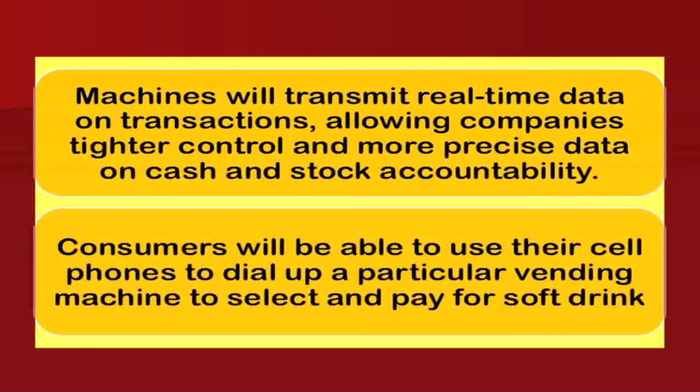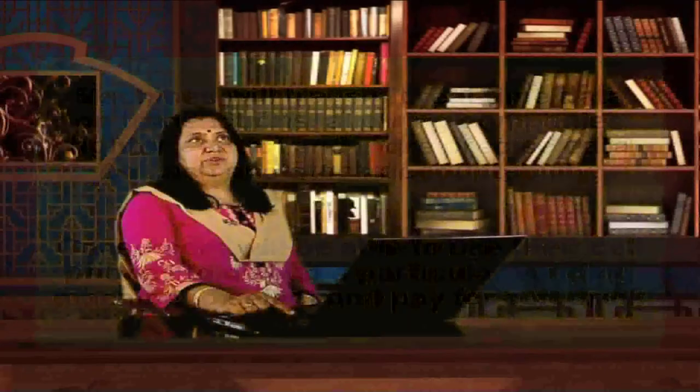Machines will transmit real-time data on transactions, allowing companies to have tighter control and more precise data on cash, stock, and product accountability. Consumers will be able to use their cell phones to dial up a particular vending machine, select, and pay for products. Companies from remote locations can monitor cash and stock status, and consumers can order and pay through mobile phones to collect their stock.